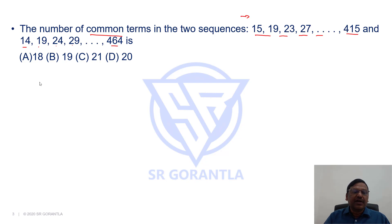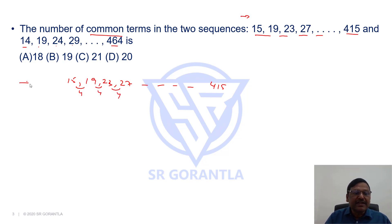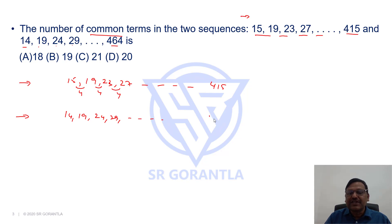If you look at the first sequence, we have 15, 19, 23, 27, and so on till 415. There is a common difference of 4 in this series. In the second series, we have 14, 19, 24, 29, and so on till 464, with a common difference of 5.